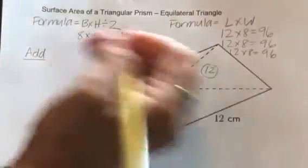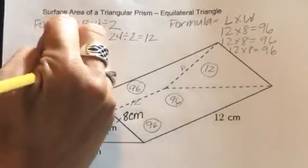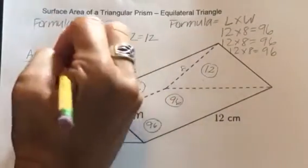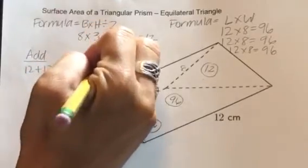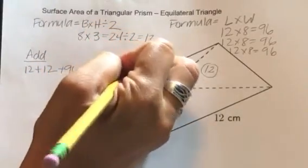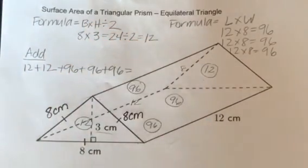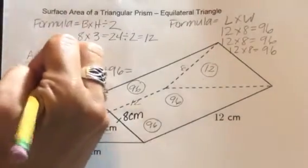So we're going to do 12 plus 12, and then 96 plus 96 plus 96. And then when we add all those together, we get 312.